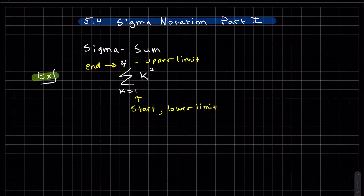So what this means is we sum up starting with k equals 1. You plug into here and we get 1 squared and you sum it plus the next counter is k equals 2 which is 2 squared.